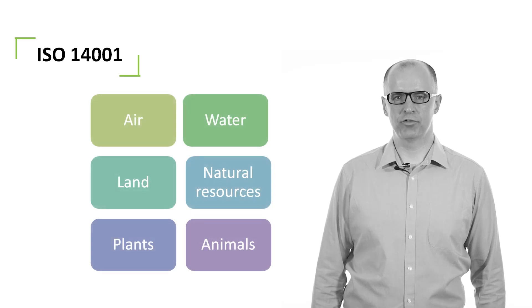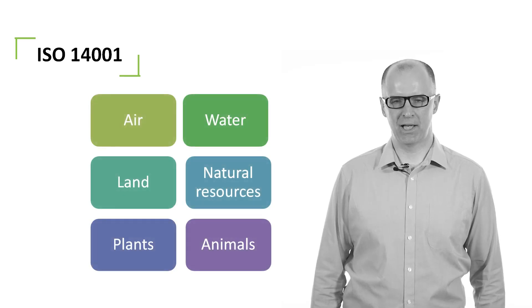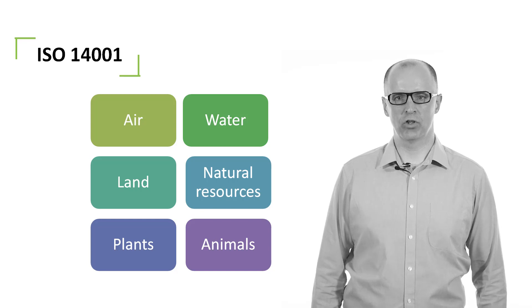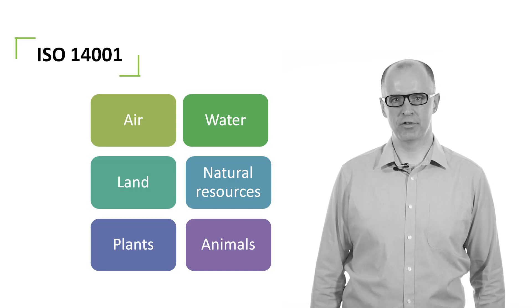Surroundings include air, water, land, natural resources, plants and animals. Such surroundings may form part of the local, regional or global system.